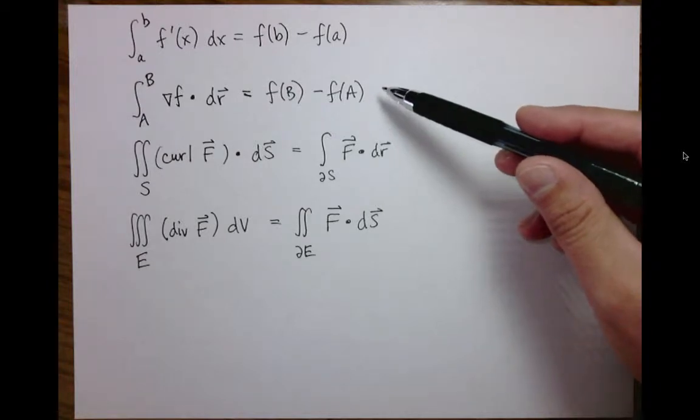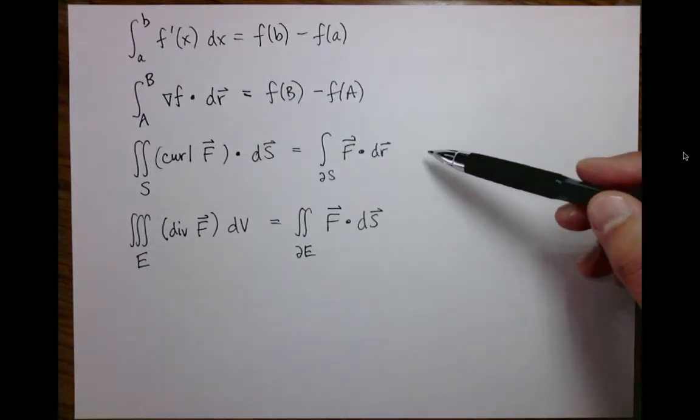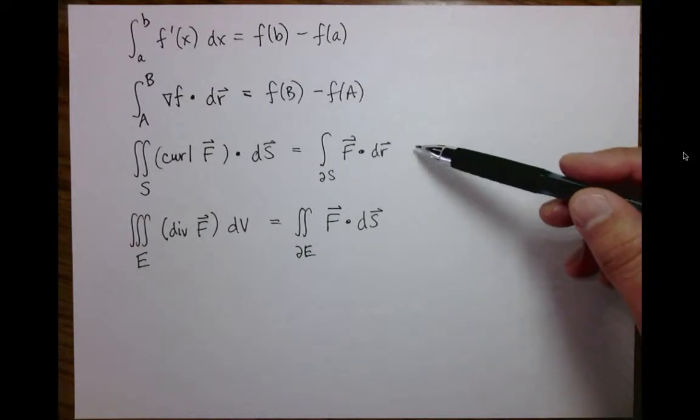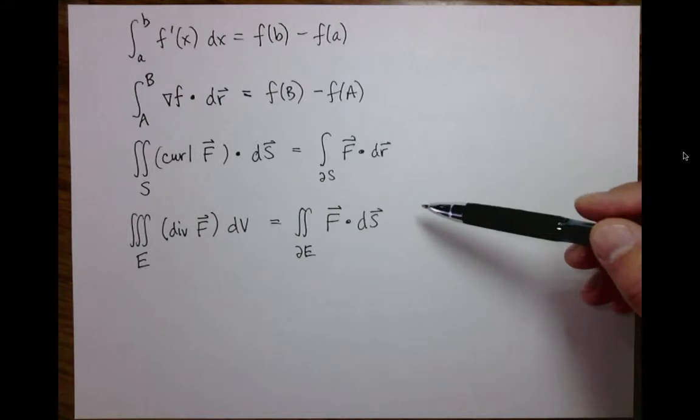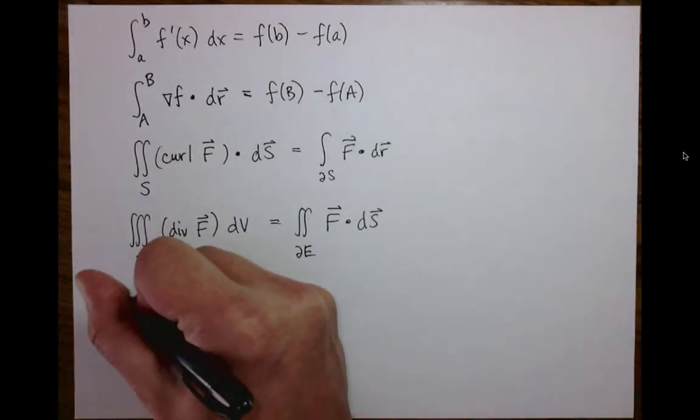Then for vector fields, there are two kinds of derivatives and each one has its own theorem, Stokes theorem and the divergence theorem. All of these theorems have a common structure.